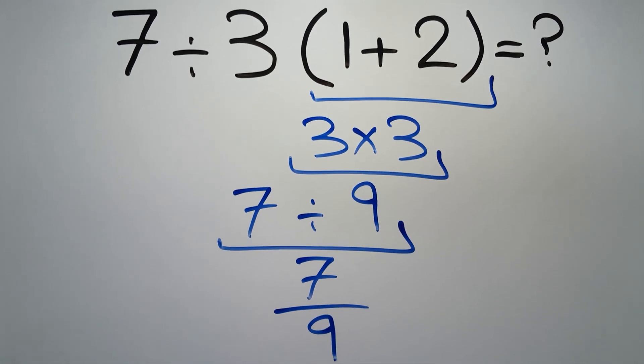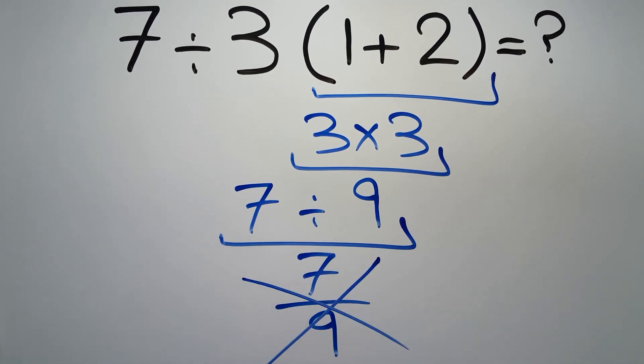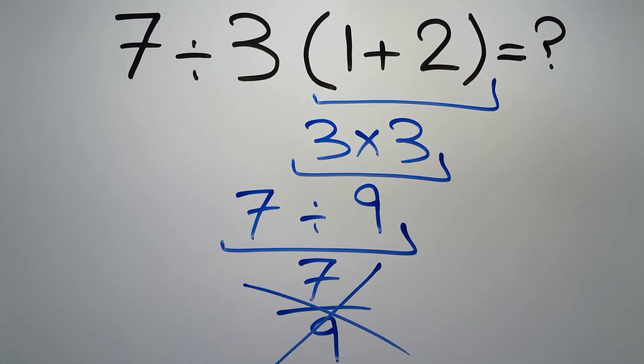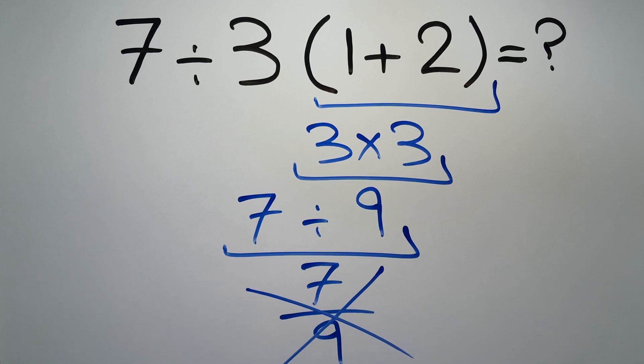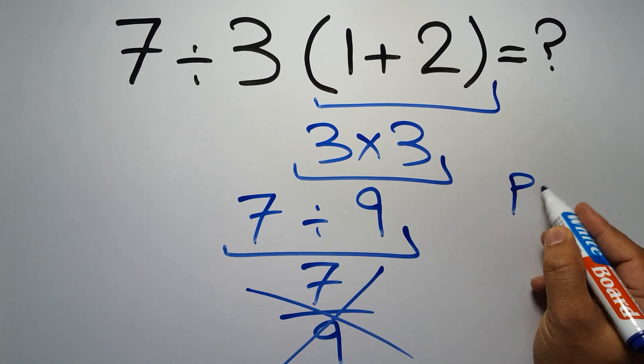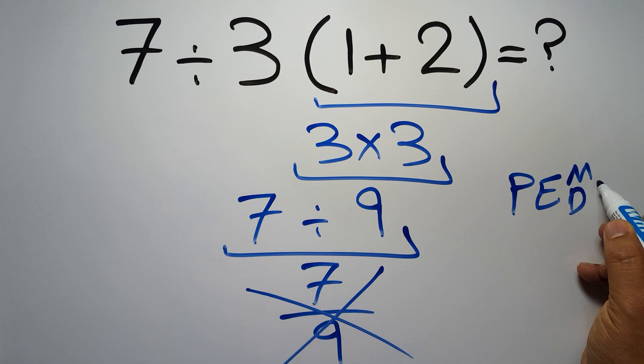But this answer is not correct, because according to the order of operations, first we have to do parentheses, then exponents, then multiplication or division, and finally addition or subtraction.